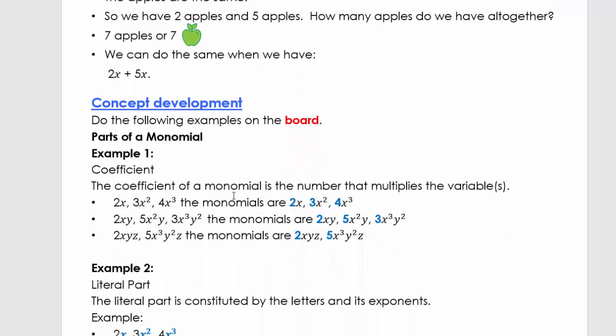Let's look at the concept development. We're going to look at the parts of monomials. First, the coefficient. The coefficient of a monomial is the number that multiplies the variable. Here we have 2x, 3x squared, 4x to the power of 3, and the coefficients in these monomials are 2, 3, and 4.